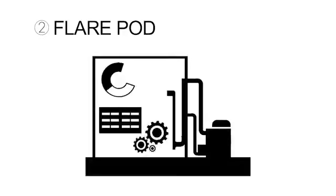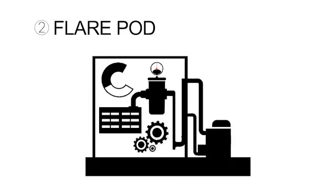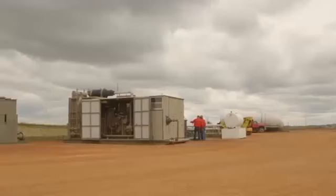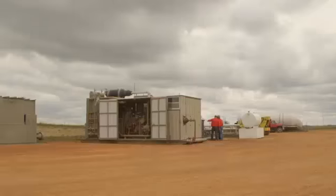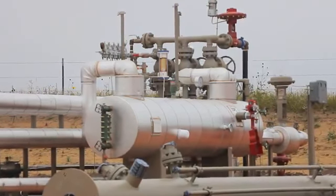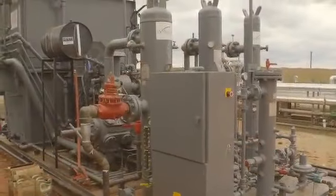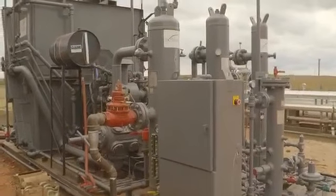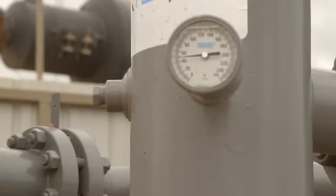And that's where Omni's FlarePod goes to work. From the moment that well begins to produce gases, the Omnipod chills those gases, separates those gases, cleans those gases, and produces the butanes, the propanes, the liquid natural gas that now is energy.